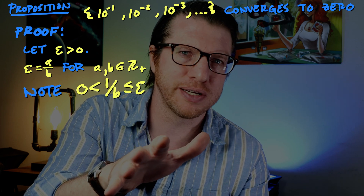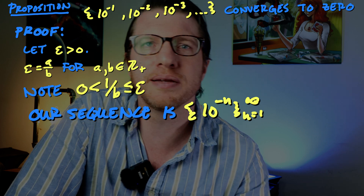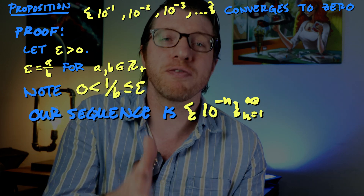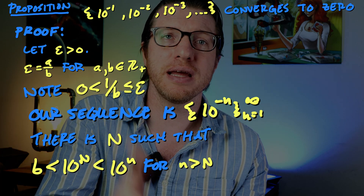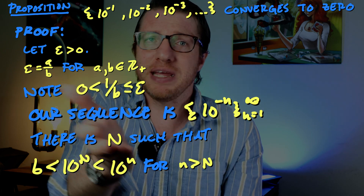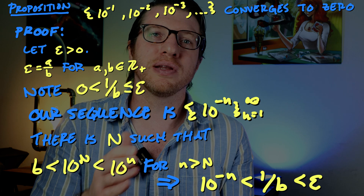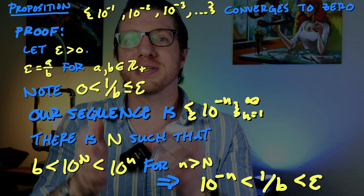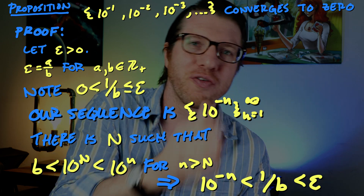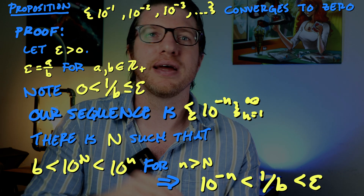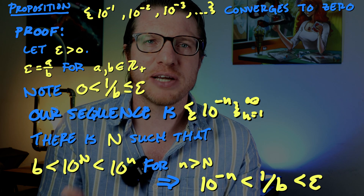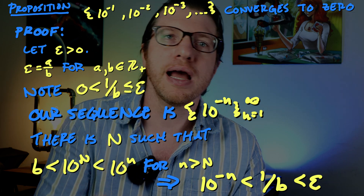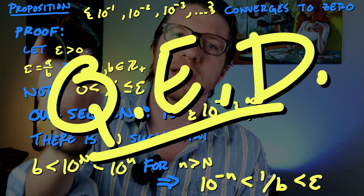Suppose we are given some rational epsilon. Since epsilon is rational, write it as a over b for some positive integer a at least 1, so 1 over b is less than or equal to epsilon. Our sequence is 10^(−n). For whatever b we choose, there is some N where a power of 10 exceeds b. Once 10^N is bigger than b, then for all n > N, 10^n > b, so 1 over 10^n is less than 1 over 10^N, which is less than 1 over b, which is less than epsilon. Since epsilon is arbitrary, we have demonstrated that this sequence converges to zero.